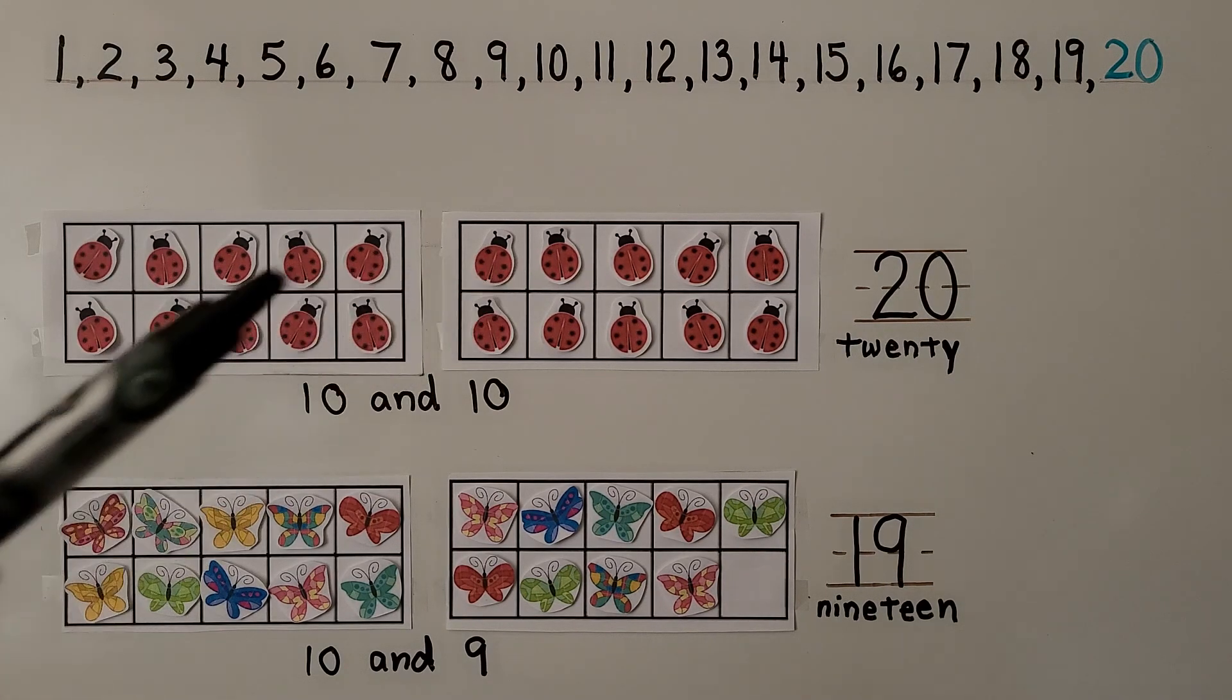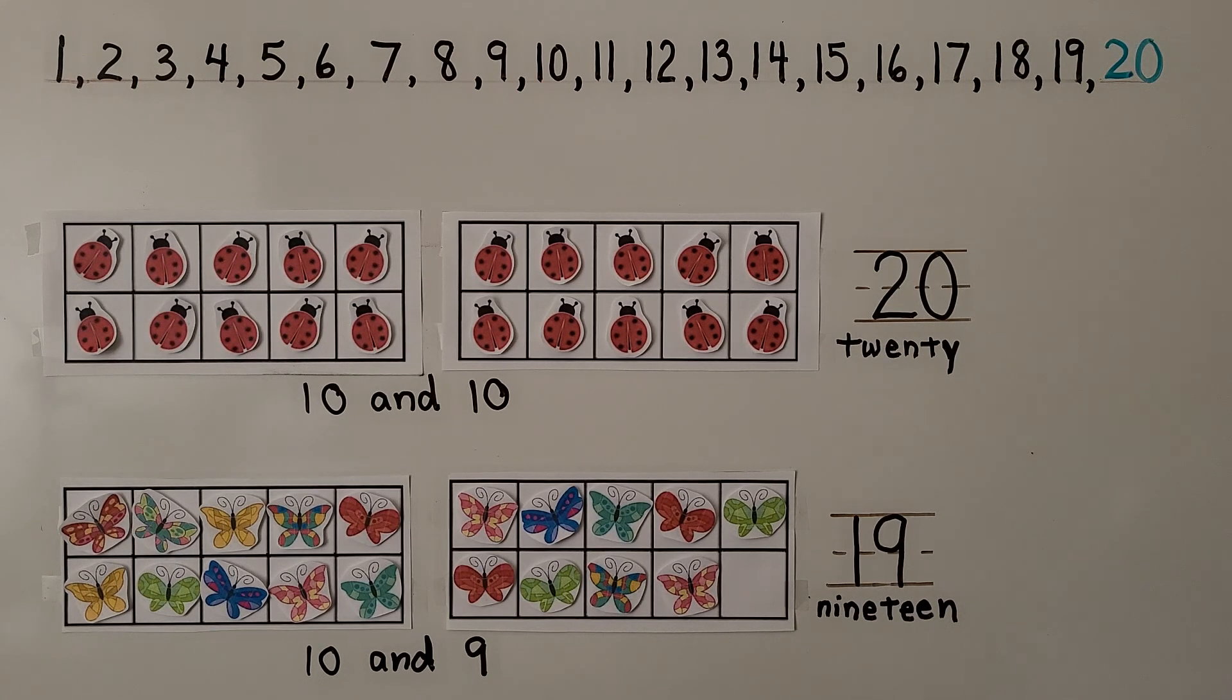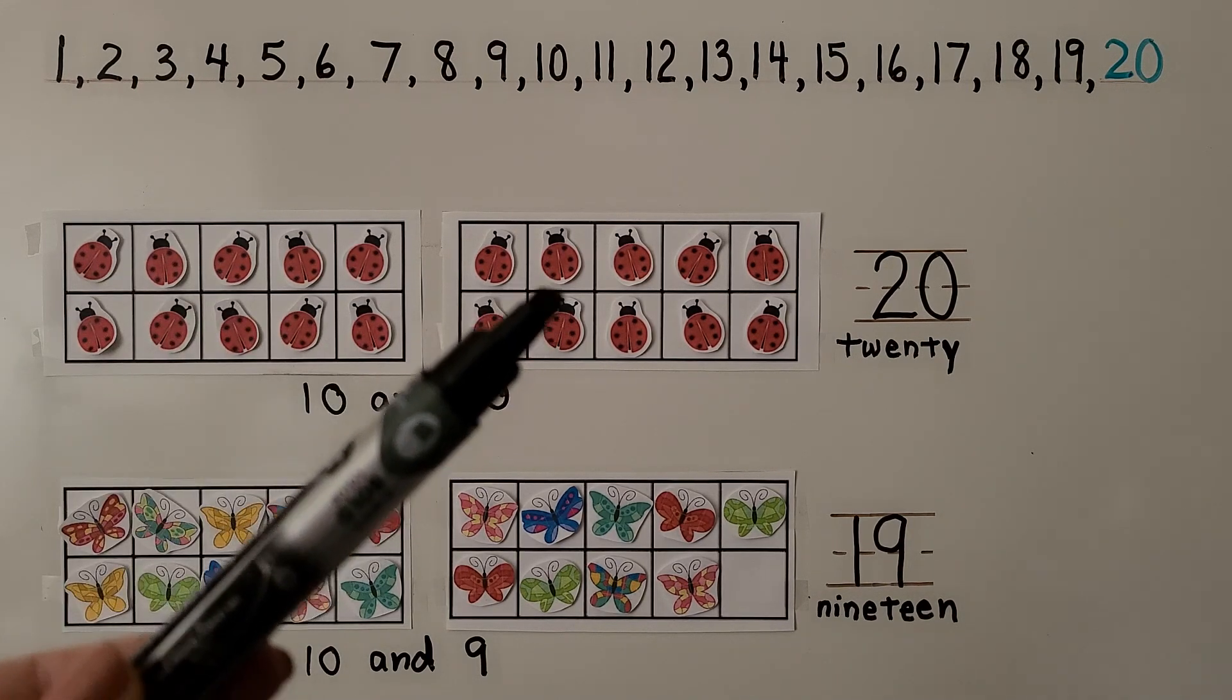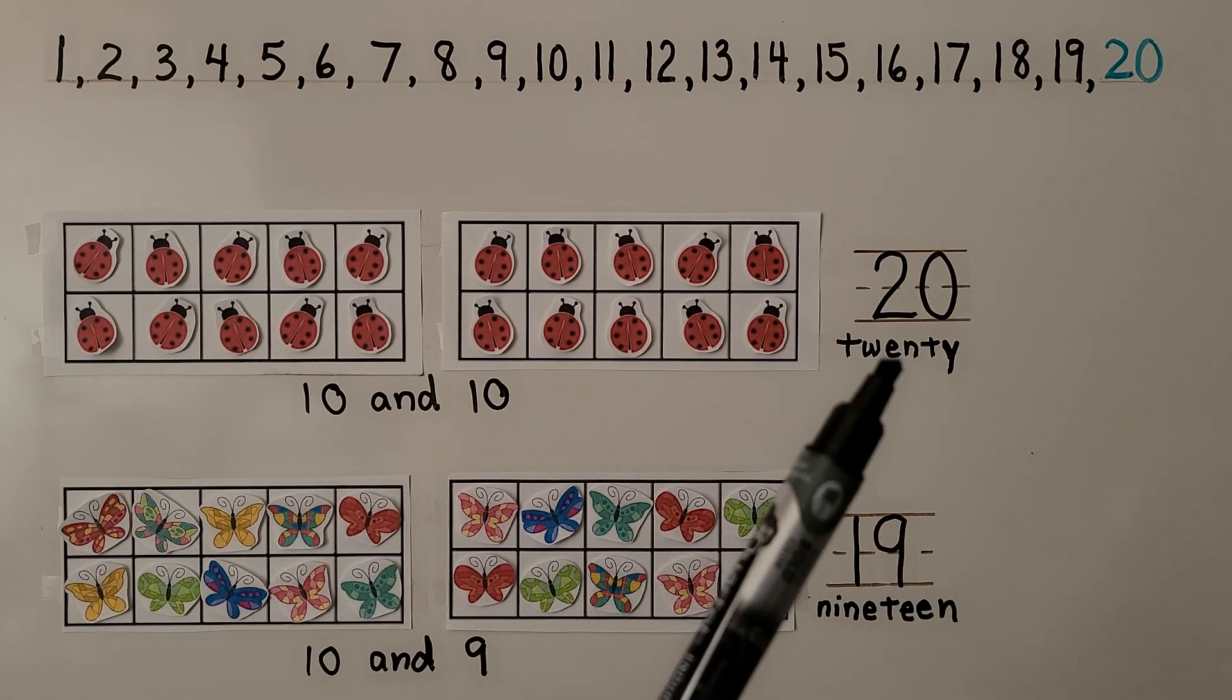Here we have some ladybugs, and both 10 frames are full. So we know there are two 10s. There's a 10 and a 10. We know there are 20 ladybugs. We have the number 20 and the word twenty.